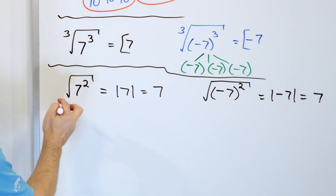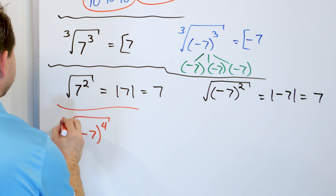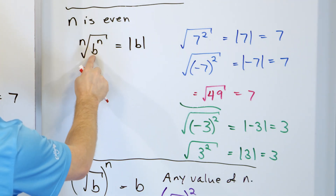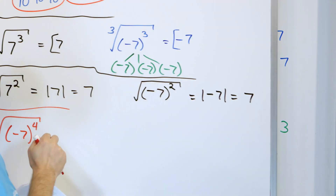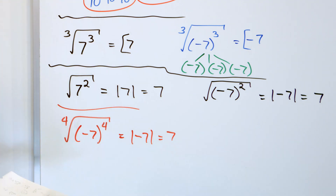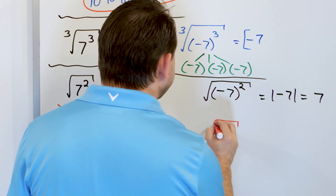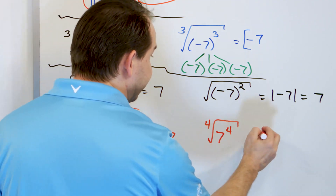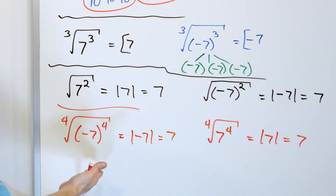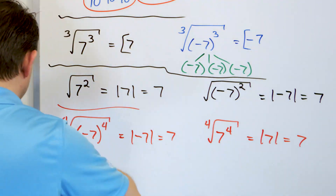To drill that home: what if you have negative 7 to the fourth power and you cancel it with a fourth root? Again, this is even — so you do cancel it, but you take the absolute value of what's left over. Instead of negative 7, you get the absolute value, which is 7. Same for positive 7 to the fourth under a fourth root: cancellation gives you positive 7, and taking the absolute value still gives 7. The easiest way to remember it: when the root is even, take the absolute value of what's left over. When it's odd, you just take what's left over.